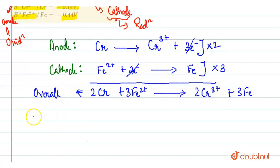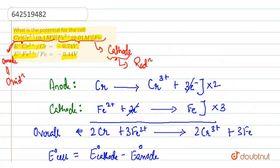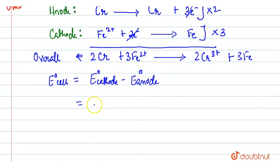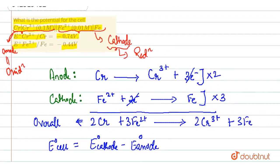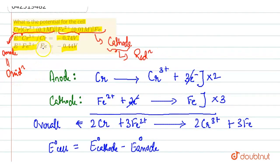Now, you have to find out the E0 cell. E0 cell is E of cathode minus E of anode. For cathode, the E0 cell is given to you as minus 0.44 volt. For anode, E0 cell is given to you as minus 0.74 volt. Now, one thing you have to see here, Fe2+ to Fe.